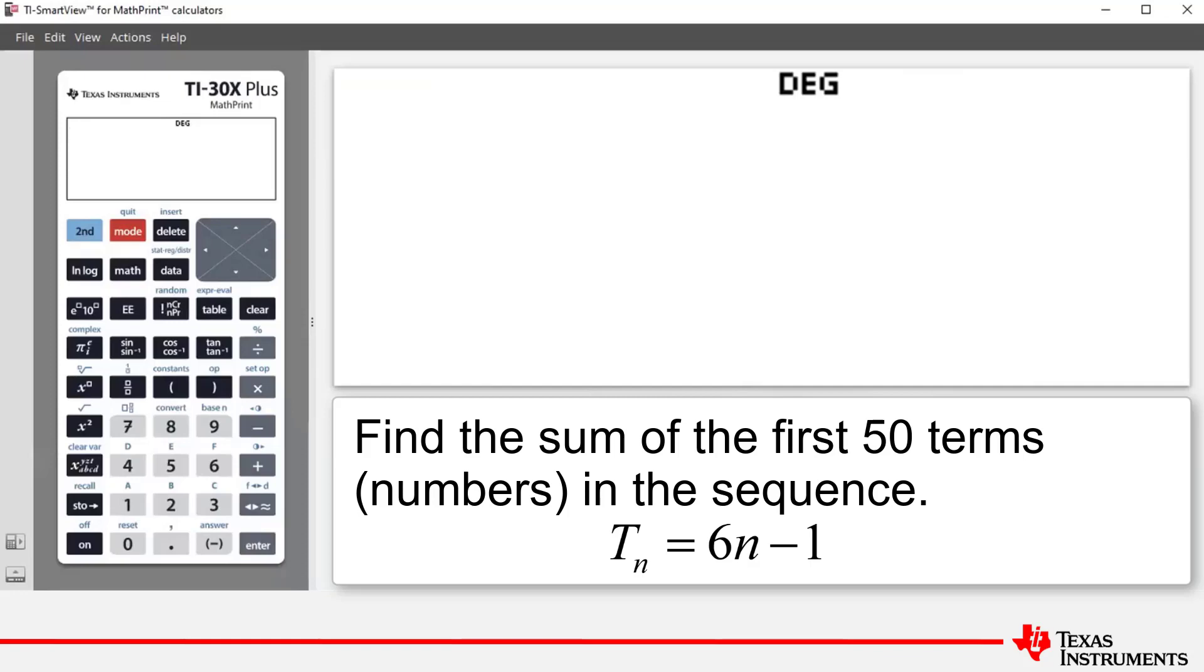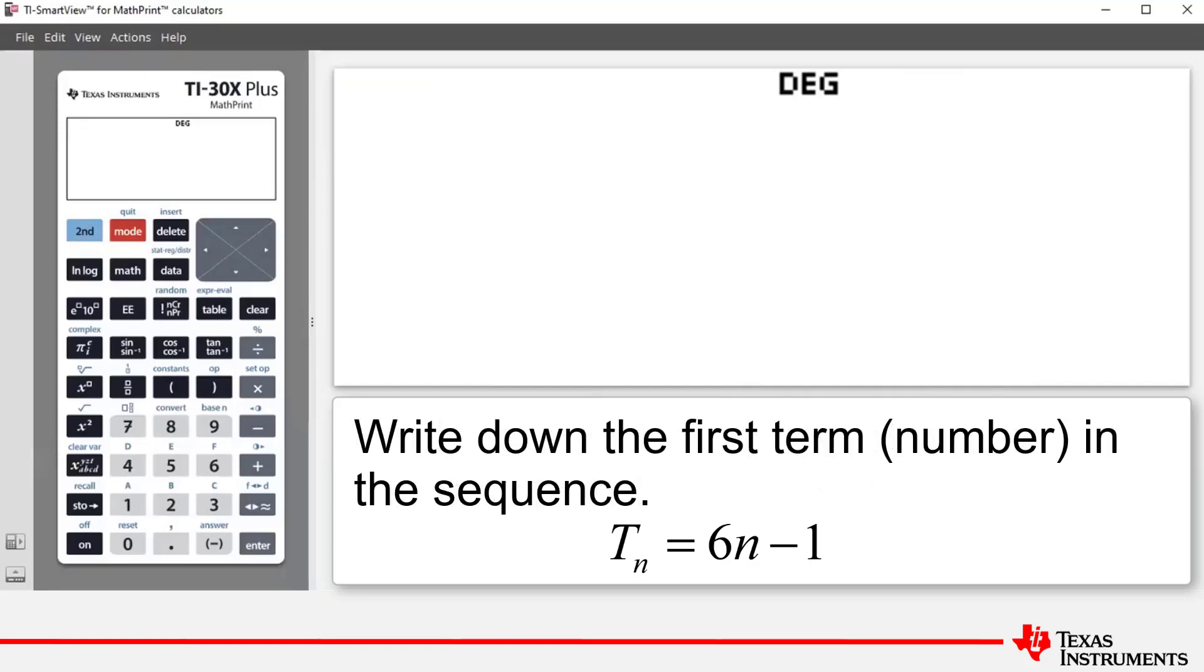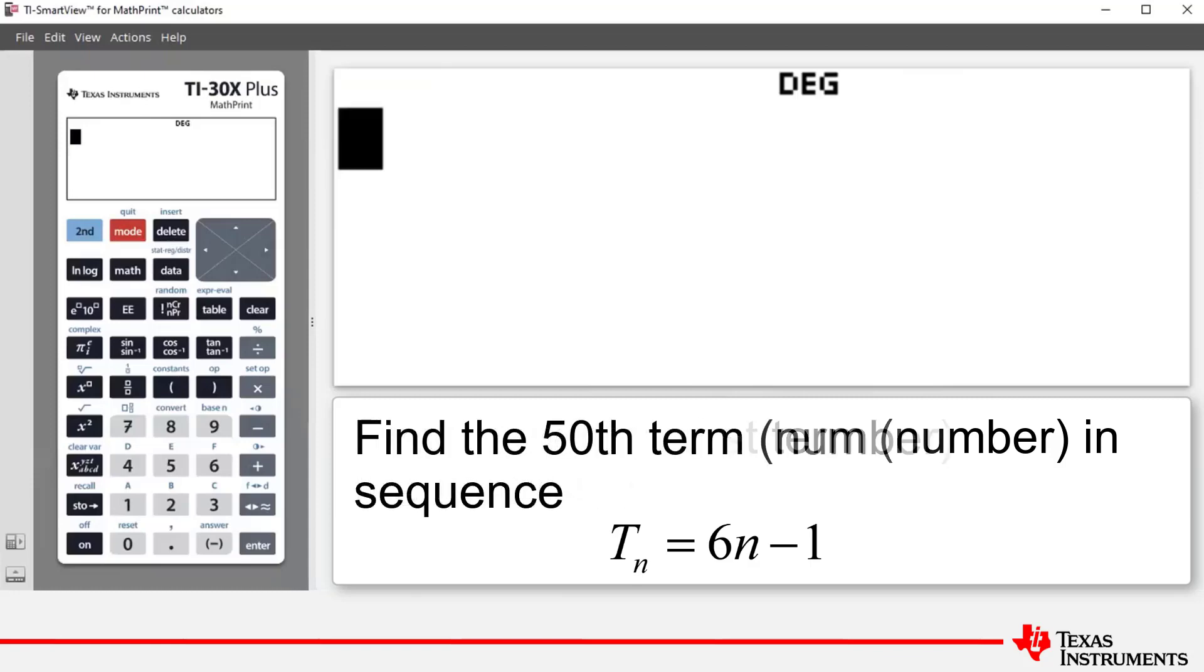So we can answer parts A and B quite quickly now. The first term corresponds to n equals 1. So we substitute n equals 1 into our formula. And 6 times 1 is 6 minus 1 is 5. So the first term or first number in the sequence is 5. To find the 50th term we substitute n equals 50 into our formula and we get 6 times 50 is 300 minus 1 is 299.